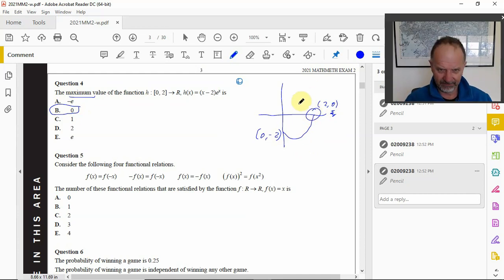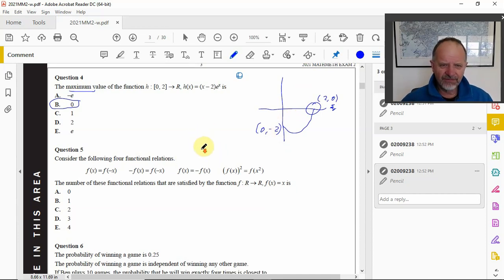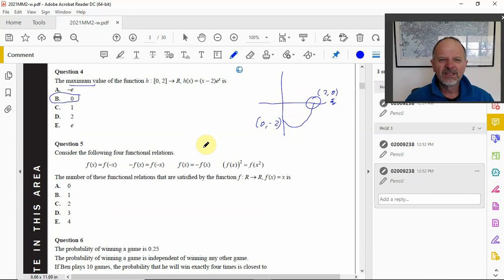Number five: consider the following four relations. f(x) is the same as f(-x), and -f(x) is the same as f(-x), f(x) is the same as -f(x), and then f(x²) is the same as f(x)².